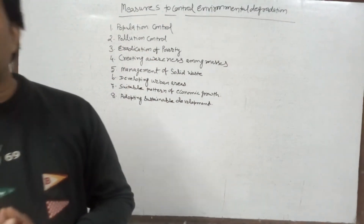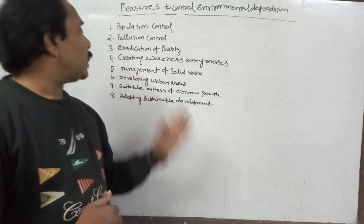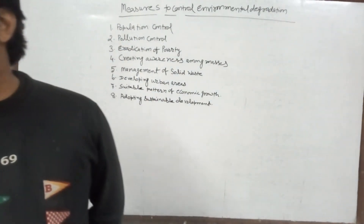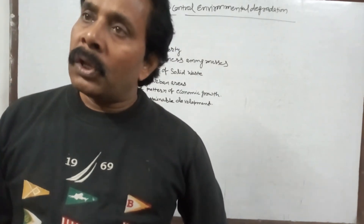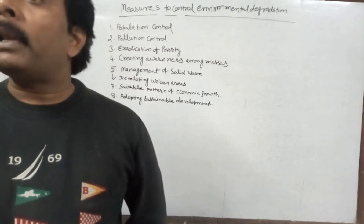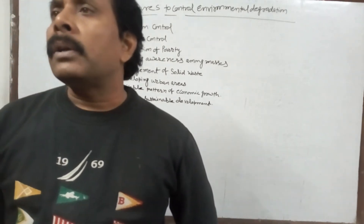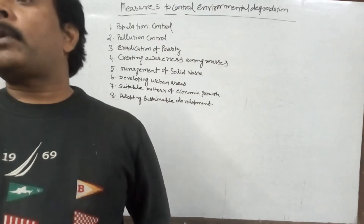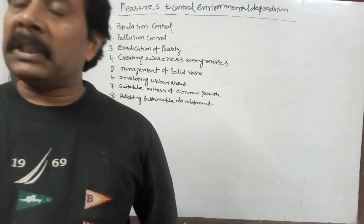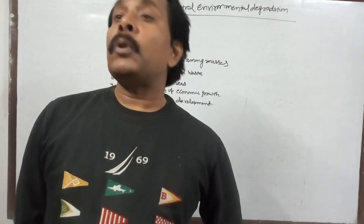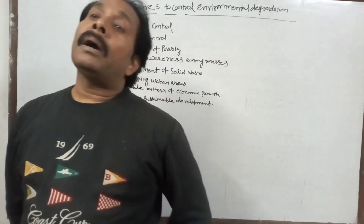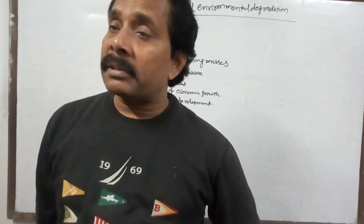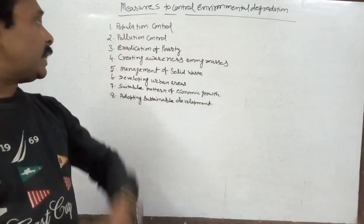Next is the eradication of poverty. Eradication means removal of poverty, which is very essential to safeguard our environment. Removing poverty will help people move to jobs which protect the environment. They will move away from cutting of trees, fishing, and other activities harmful to nature that they do for their livelihood. Most importantly, they will not use excessive agricultural inputs such as fertilizers, pesticides, and insecticides.